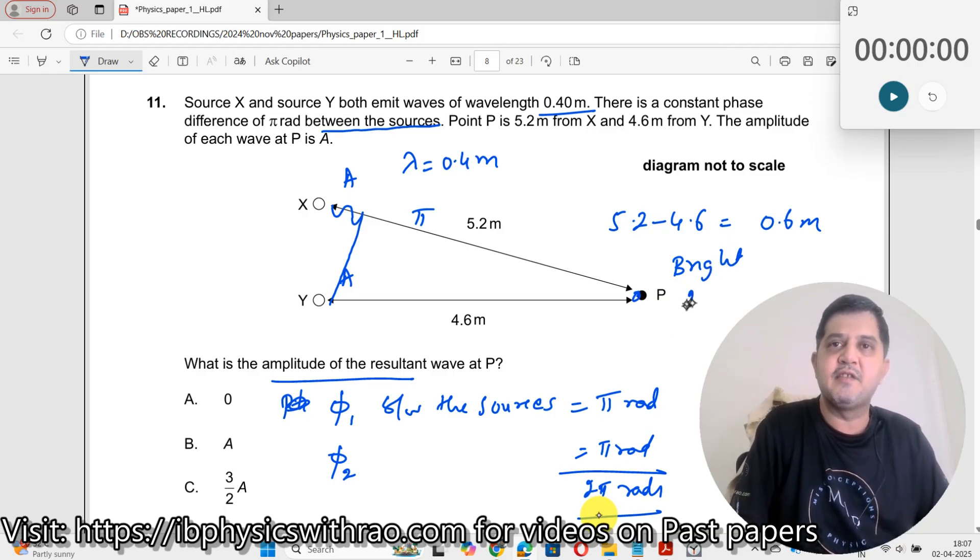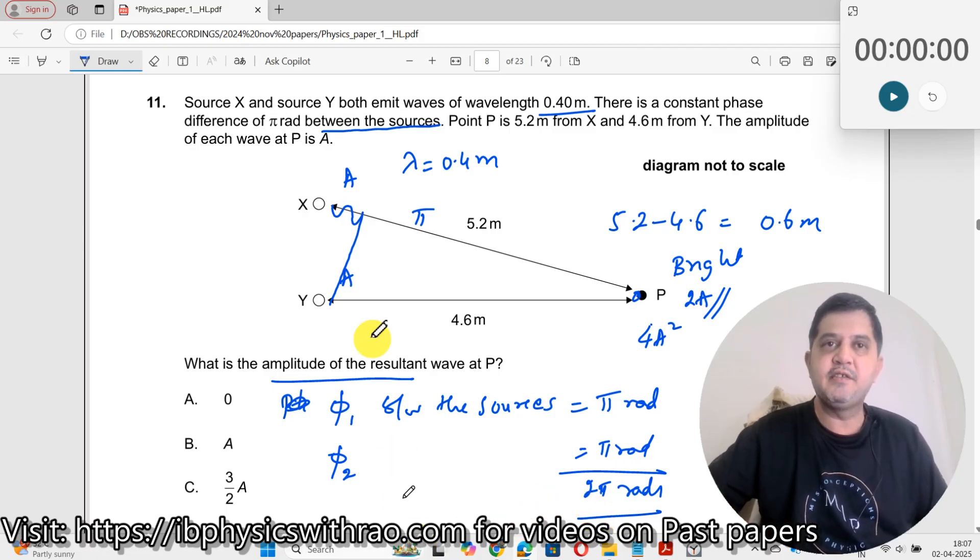Amplitude of it would be larger, it would be equal to 2A. So that intensity becomes 4A squared, which you have already learned. So therefore, the answer here is B.